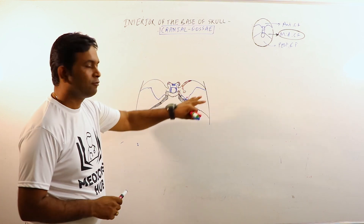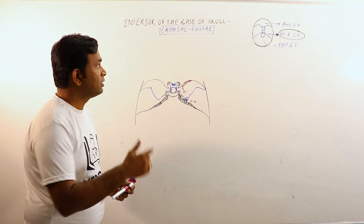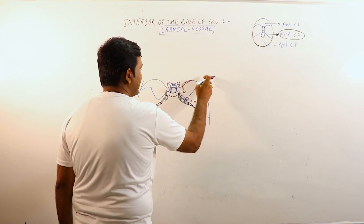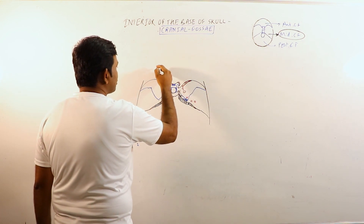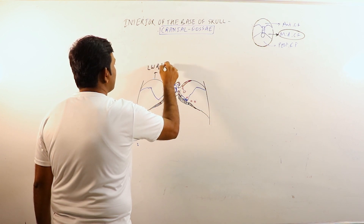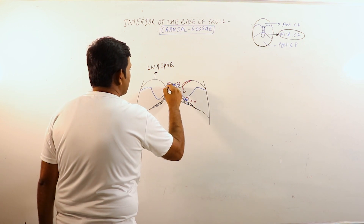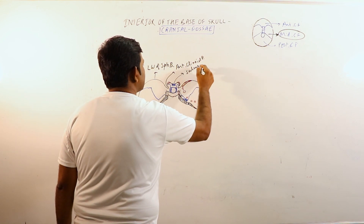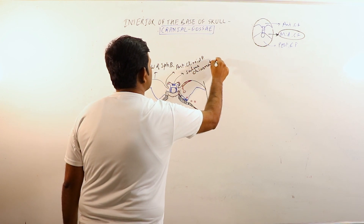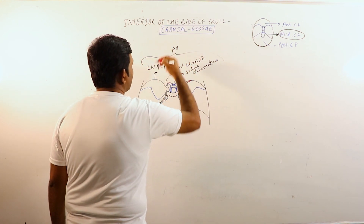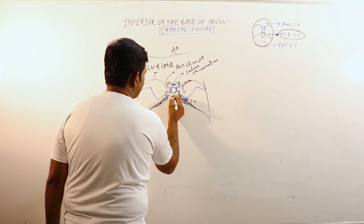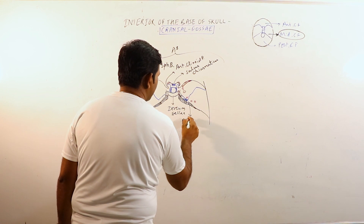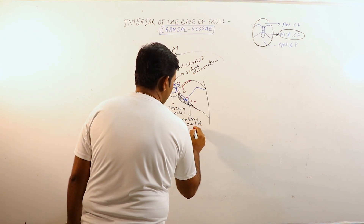The middle cranial fossa appears to be butterfly-shaped and is more deep in comparison to the anterior cranial fossa. The anterior boundary is contributed by the lesser wings of the sphenoid bone, the anterior clinoid process, and the sulcus chiasmaticus. The posterior boundary is contributed by the dorsum sellae and the petrous part of the temporal bone.